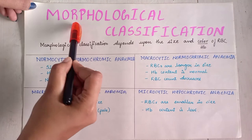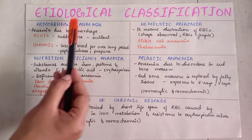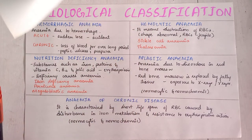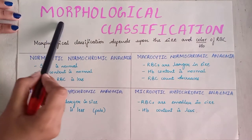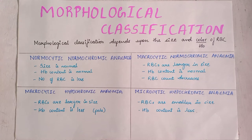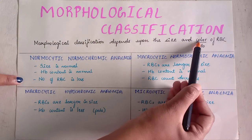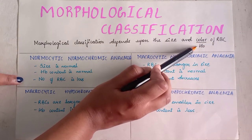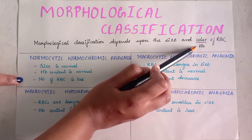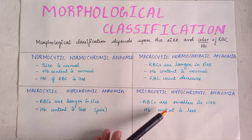Classification of anemia. It is of two types: morphological classification and etiological classification. In morphological classification, morphology means the structure. This classification depends upon the size and color of the RBC. Color is dependent upon the hemoglobin content of the RBC. Let's understand the four types of morphological classification.